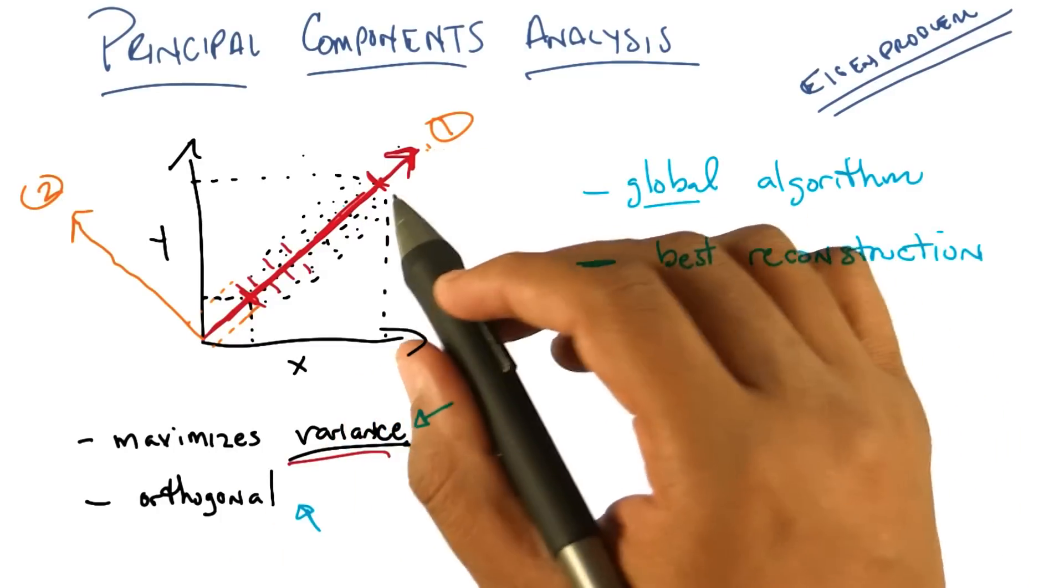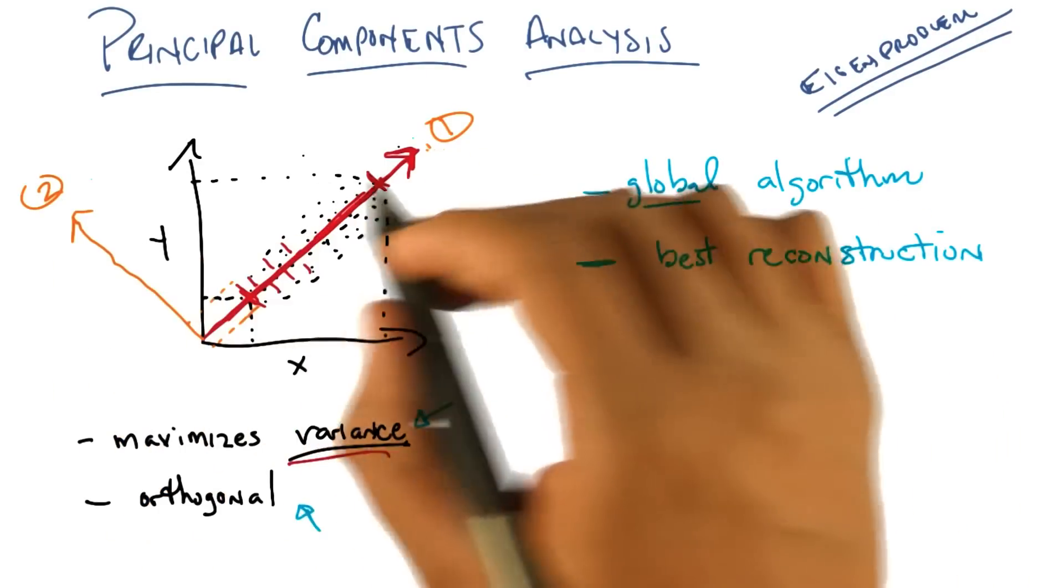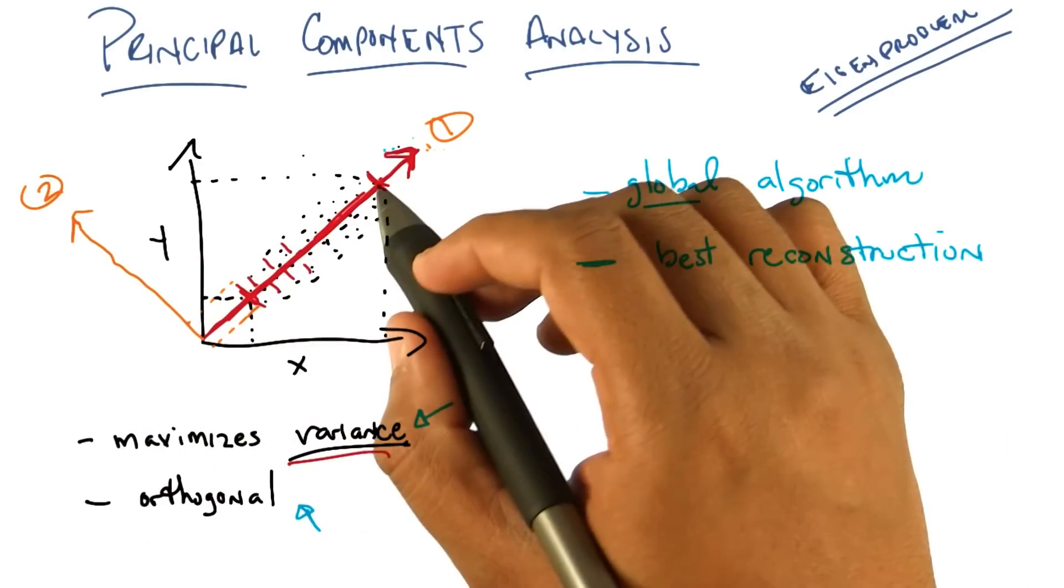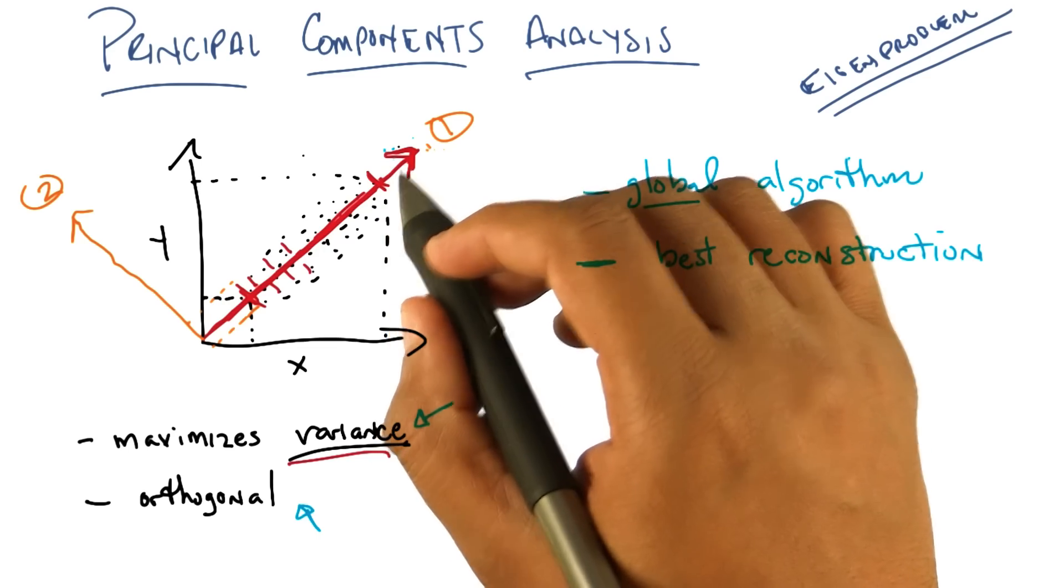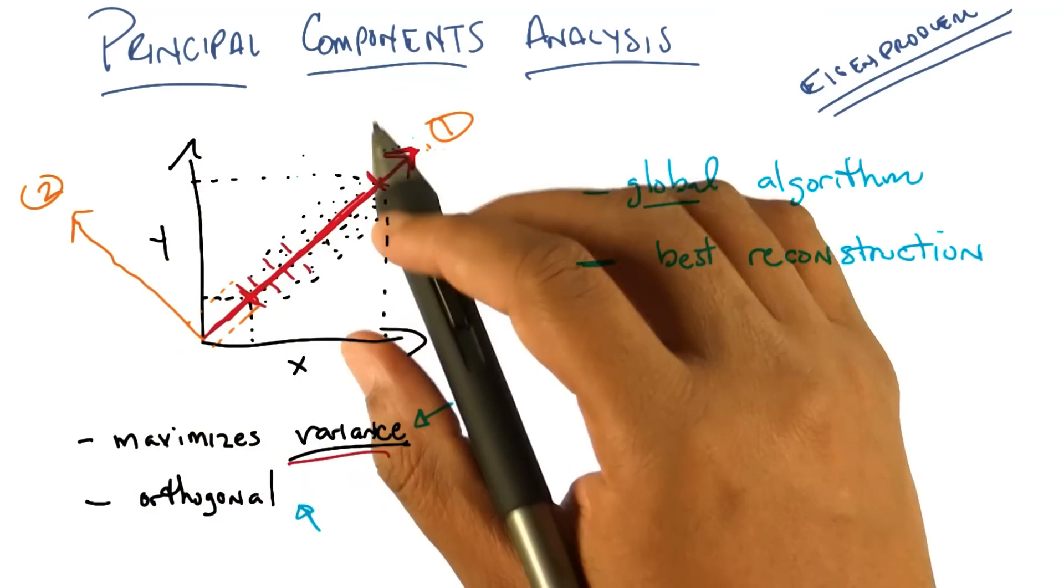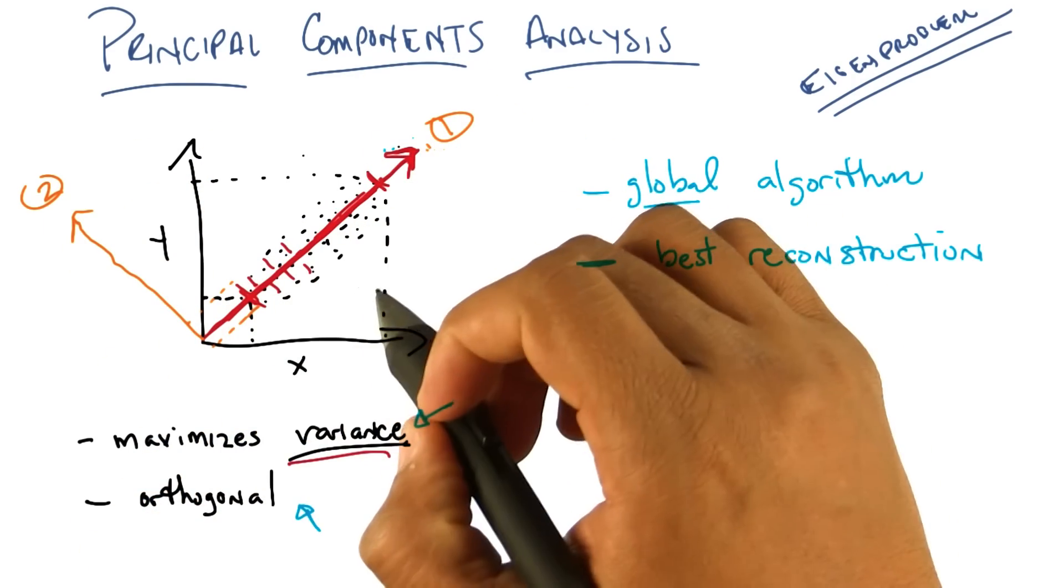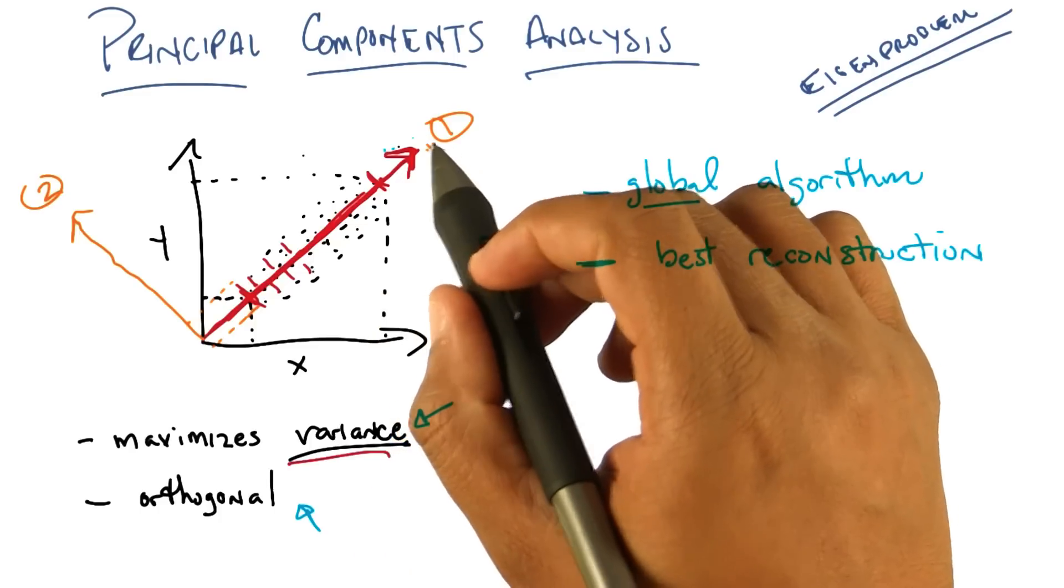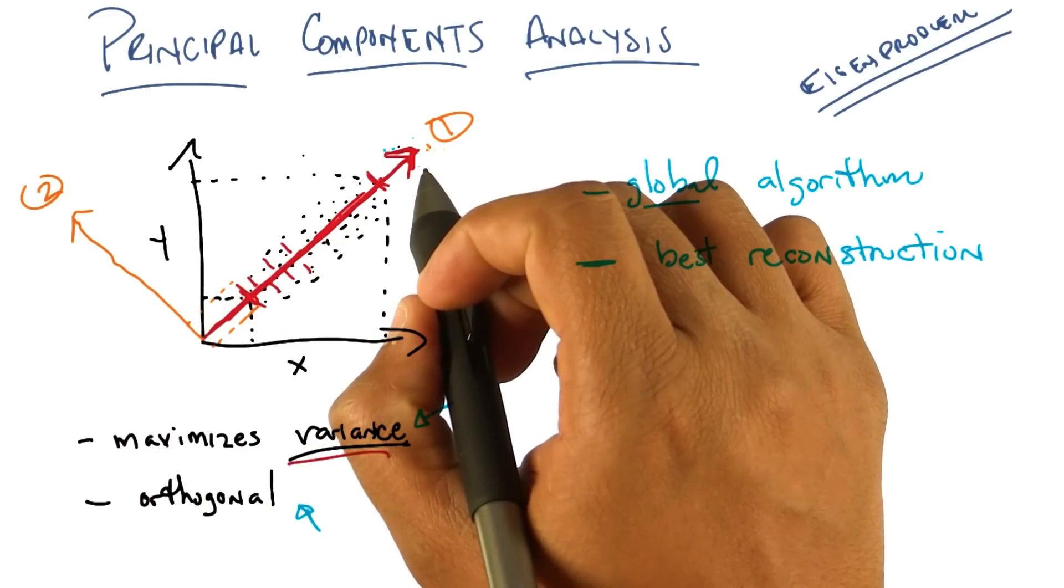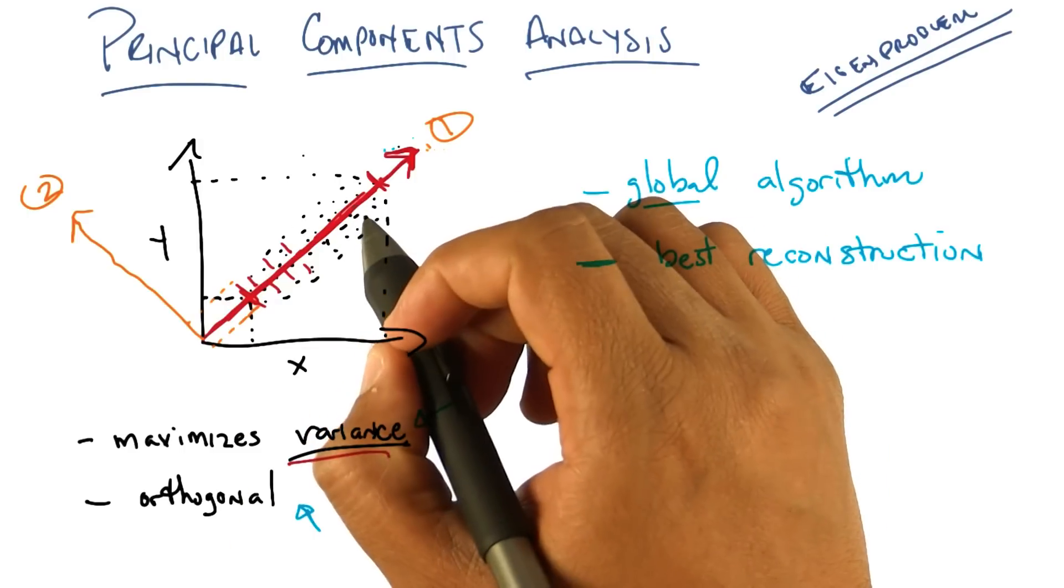The first thing I hope you see is that if I return these two dimensions, I have actually lost no information. That is, this is just a linear rotation of the original dimensions. So if I were to give you back these two different features, you could reconstruct all of your original data. You see that?